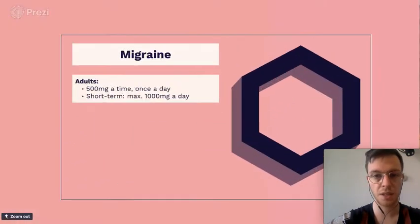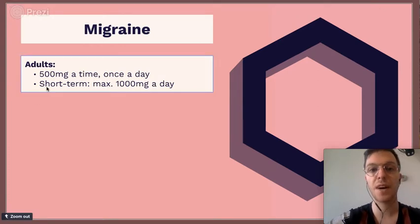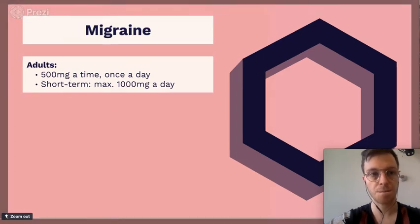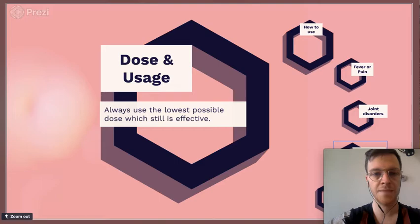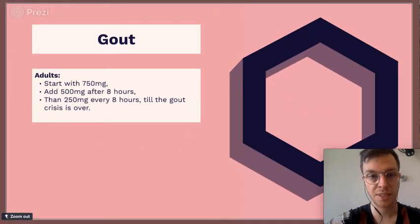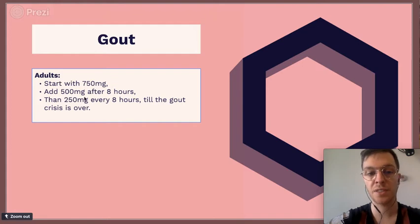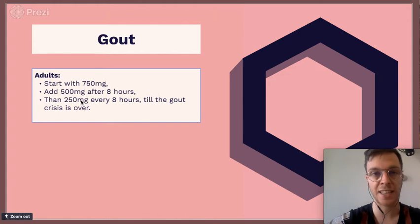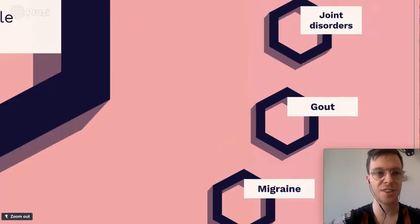For migraine, you can give 500 milligrams once, up to a maximum of 1000 milligrams per day short-term. For a gout attack, start with 750 milligrams, then 500 milligrams after 8 hours, and then 250 milligrams every 8 hours until the gout crisis and complaints are gone.